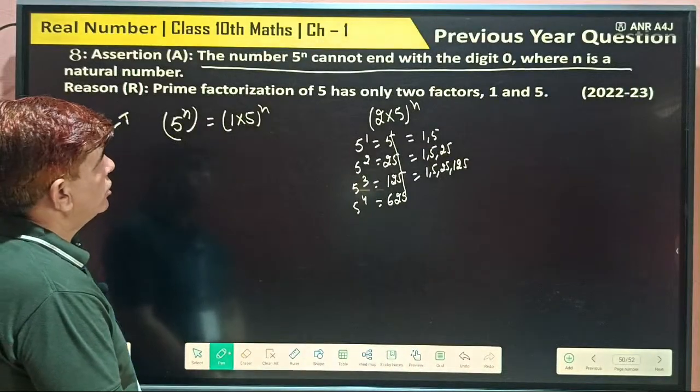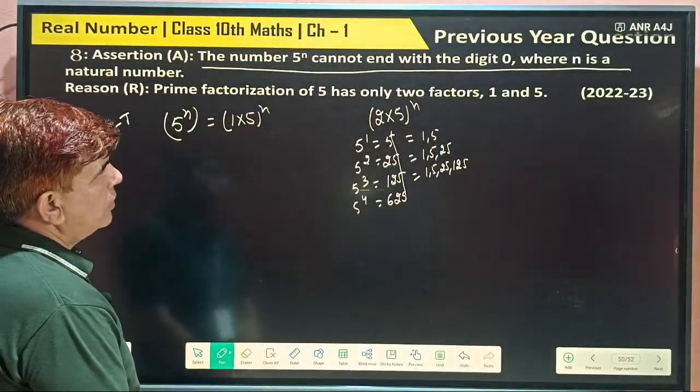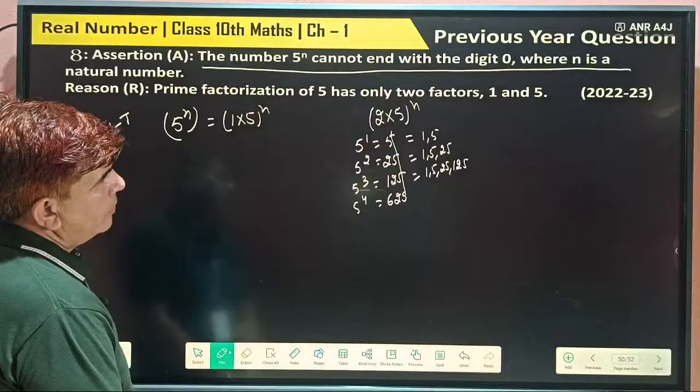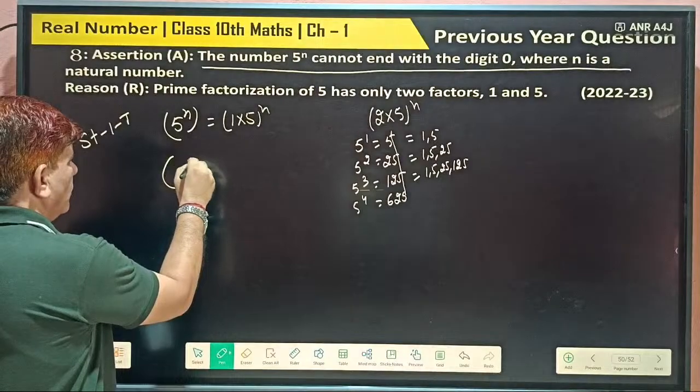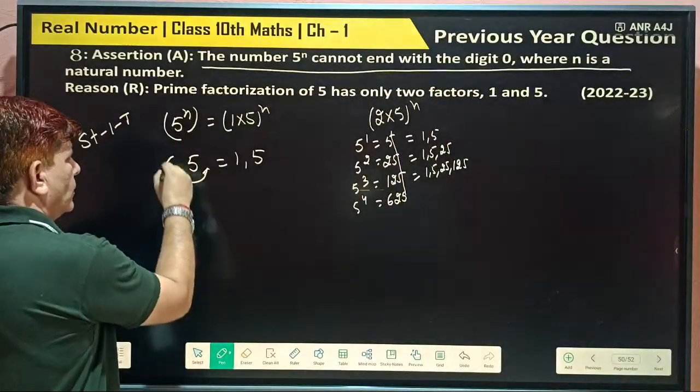Statement 2: Prime factorization of 5 has only 2 factors, 1 and 5. What are factors of 5? Factors are 1 and 5. Definitely.